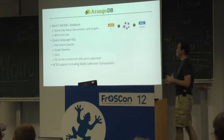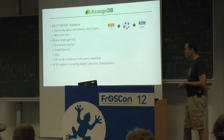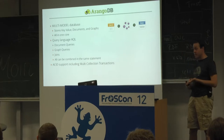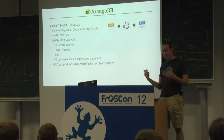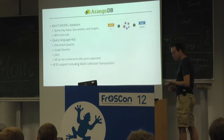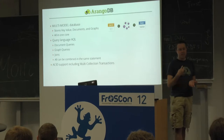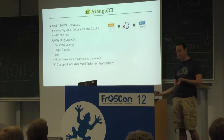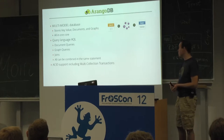Now let's get more hands-on with some technology. I'd like to introduce the open source project I'm working on: it's called ArangoDB, and it's a multi-model database. Multi-model allows storing key-value pairs, documents, and graphs within the same technology — just one core, not relying on different databases. It has a unified query language that allows querying documents, graphs, key-value pairs, and even doing joins across document collections. All of the above can be combined in a single statement, and ArangoDB has ACID support including multi-collection transactions.